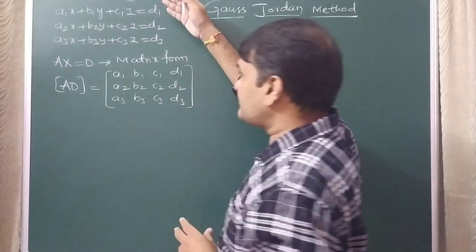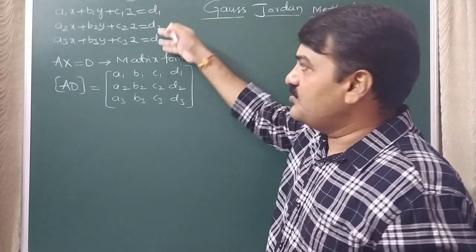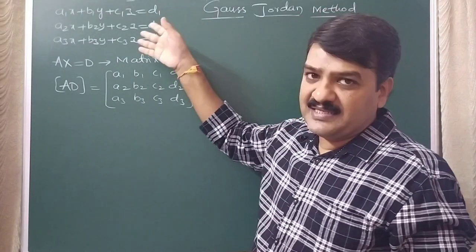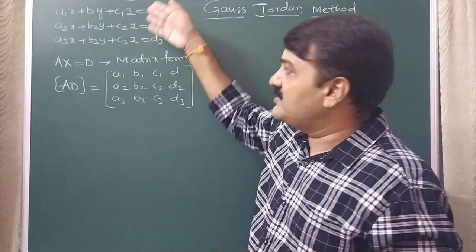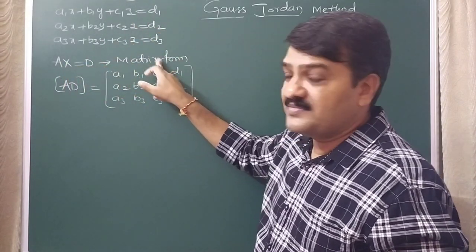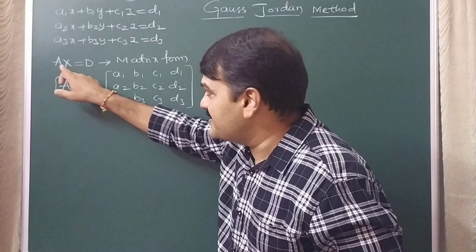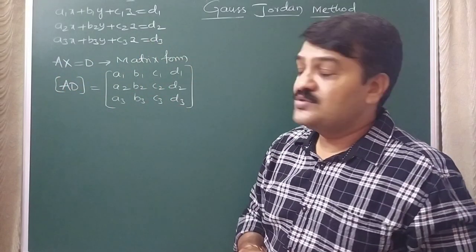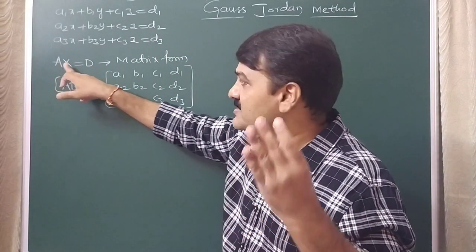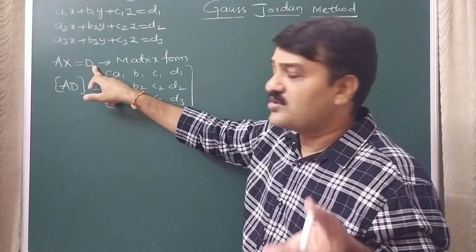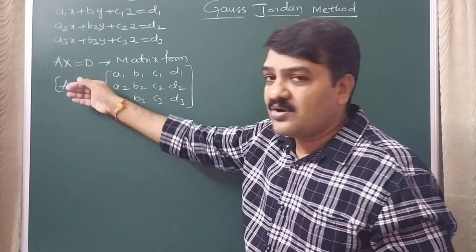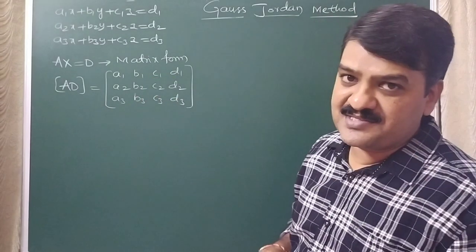So these are the 3 equations I am taking. You know very well that these equations written in matrix form is AX = D. Here A is the coefficient matrix, X is the variable matrix, and D is the constant matrix. Putting A and D together gives us the augmented matrix.